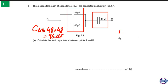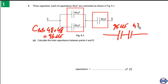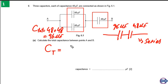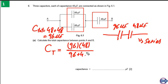We can now redraw the circuit. We have two capacitors: one with 96 microfarads and one with 48 microfarads, connected in series. The total capacitance CT equals 96 times 48 divided by 96 plus 48, which gives a final answer of 32 microfarads.